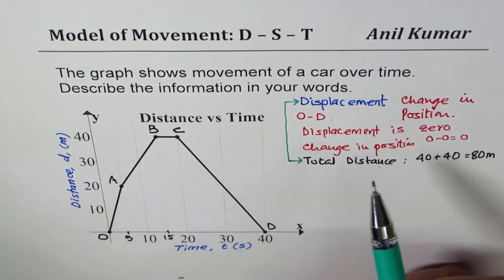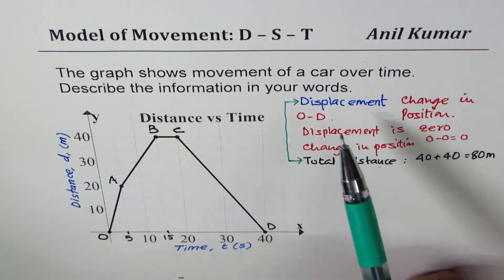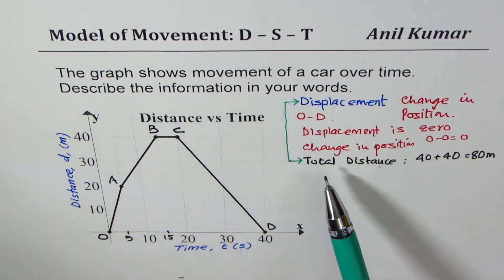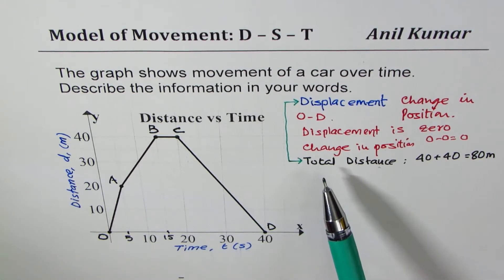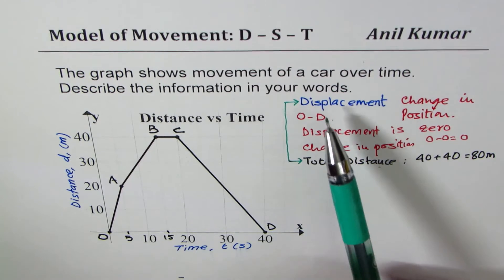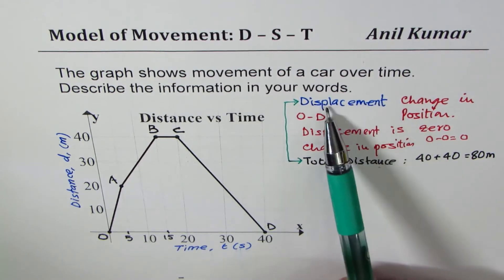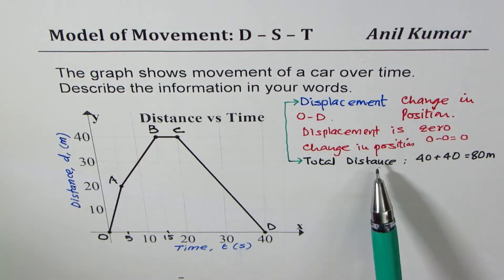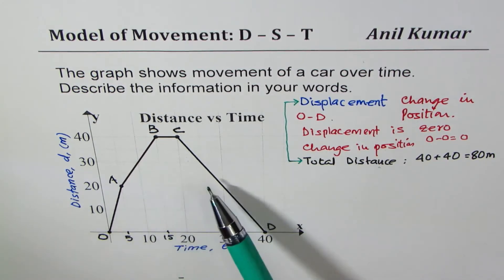For junior students, they normally use the word distance. However, we should remember that displacement is change in position and distance is how much we have traveled.